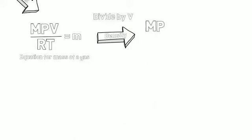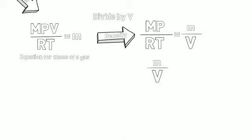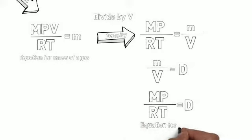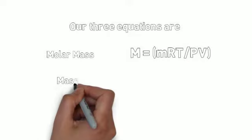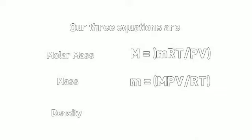Dividing by V gives us MP divided by RT equals little m over V. Little m is mass, V is volume, and mass divided by volume is density — the equation for density from the first unit. So MP divided by RT is equal to density. We now have three equations: the molar mass equation (capital M equals mRT divided by PV), the mass equation (little m equals capital M times PV divided by RT), and the density equation (density equals MP divided by RT).